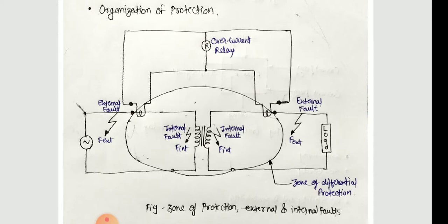How far the zone is crisply carved out depends upon the relaying principle used. In general, it can be said that the differential relaying gives a much more crisply carved out zone than overcurrent or distance relaying.